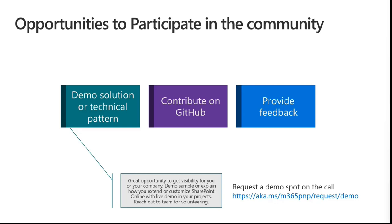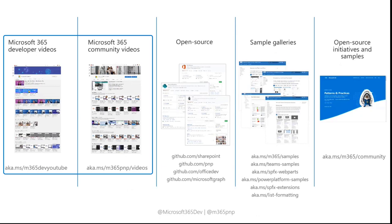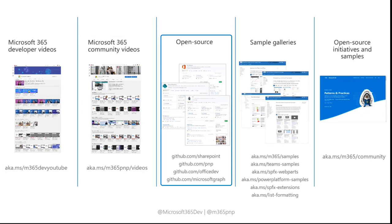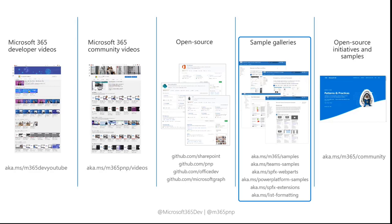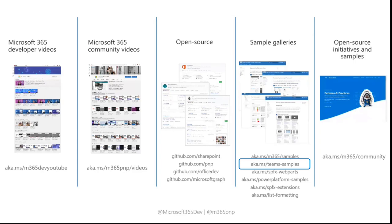Let's take an overview of the different resources available. We've got a collection of developer and community videos showcasing features and implementations of solutions. We've got open source initiatives around Microsoft Graph, SharePoint, Office Development, and Power Platform. And there are sample galleries aplenty — Teams samples, SPFx samples, Power Platform samples, SPFx extensions, list formatting — all visible at aka.ms/m365/samples. One URL to remember: aka.ms/m365/community gives access to all programs, initiatives, and samples.